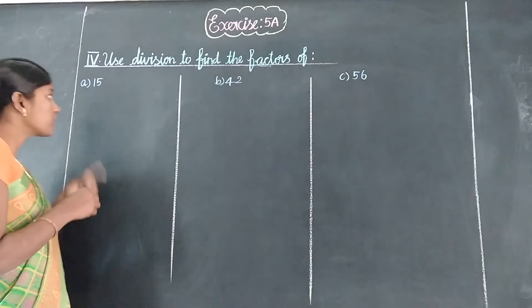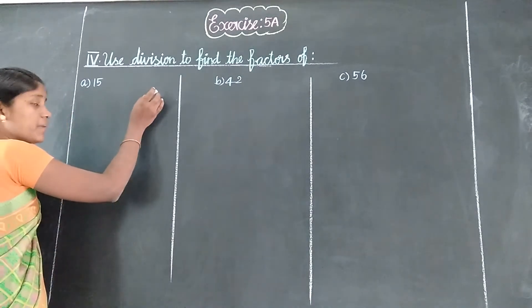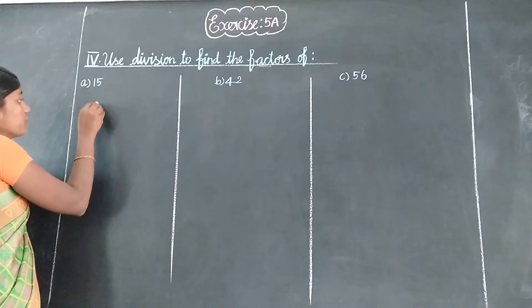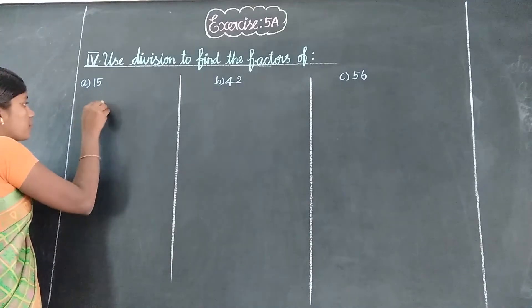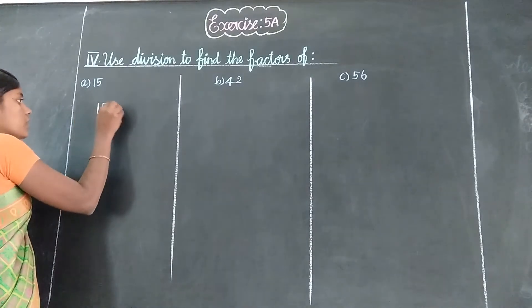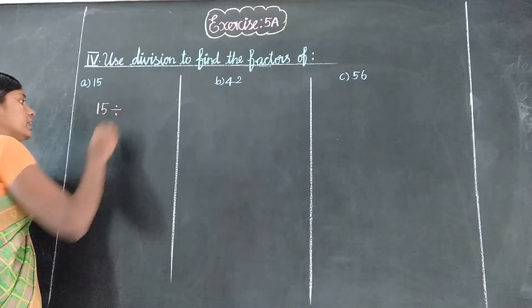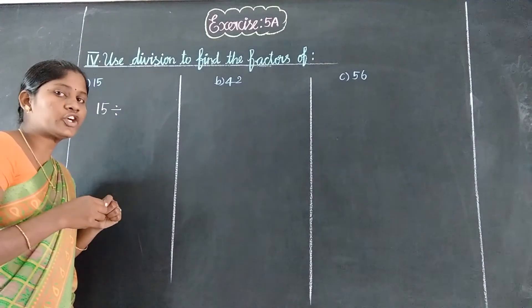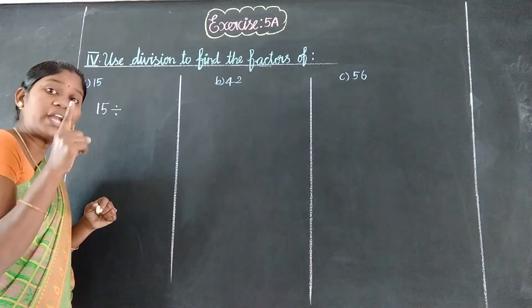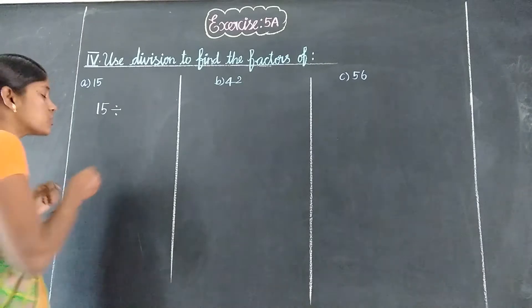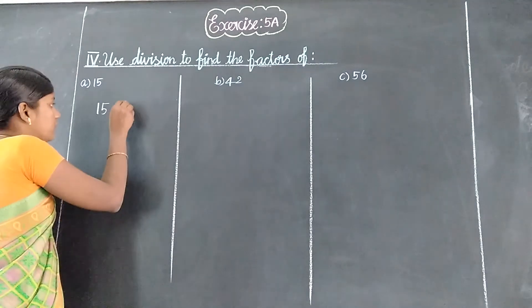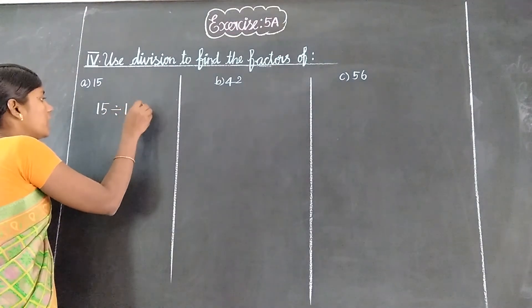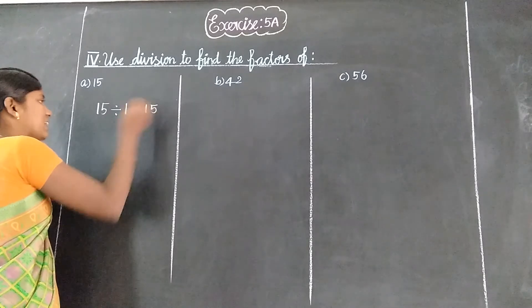The answer is a number. 15 is first. So every number — all numbers are factors. 1 will be universal. So 15 is in the 1 table. 15 divided by 1.